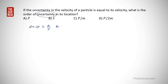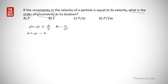Here, h-cross is nothing but h divided by 2π. This is the exact definition of the uncertainty principle. But in this question, we are asked to find the order of uncertainty, so we can approximate this relation as delta x times delta p is approximately equal to h, since we need to find only the order, not the exact value.